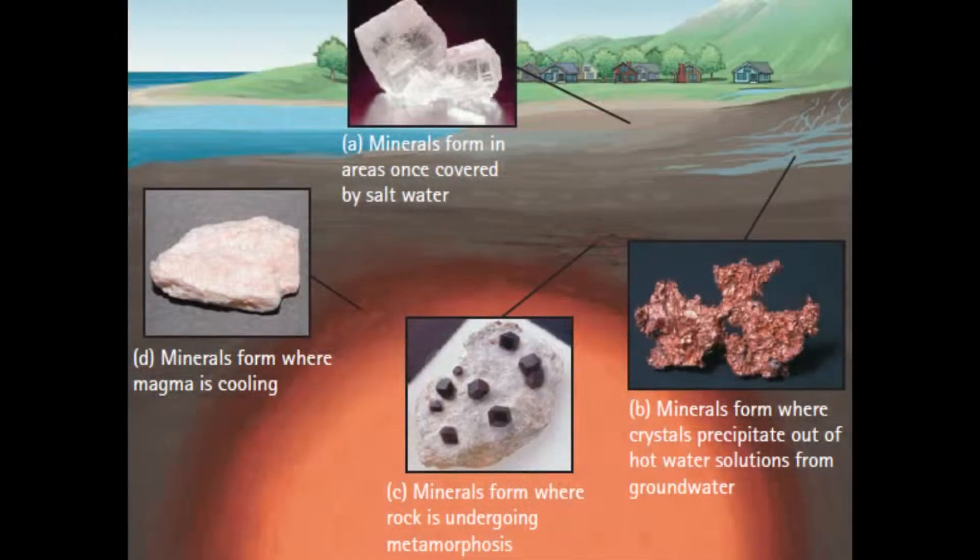We distinguish minerals that form in hot molten magma which then cools and crystallizes. There are chemical ways of formation where some crystals are modified by chemical processes. Some minerals undergo squeezing and heating of rocks — subjected to metamorphism. Let's talk about these four ways more closely.